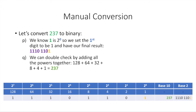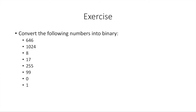We can double-check by adding all the powers: 128 + 64 + 32 + 8 + 4 + 1 = 237. That confirms our binary conversion is correct.